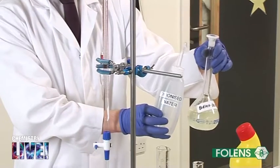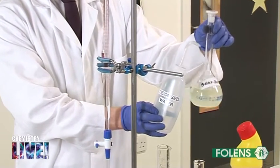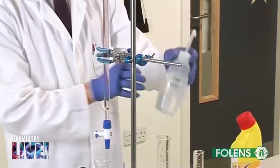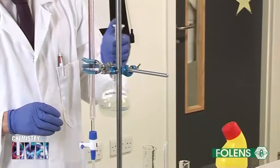Deionized water was added to the volumetric flask and made up to the mark. Note that we have diluted the bleach 10 times. The stoppered flask was inverted about 20 times.